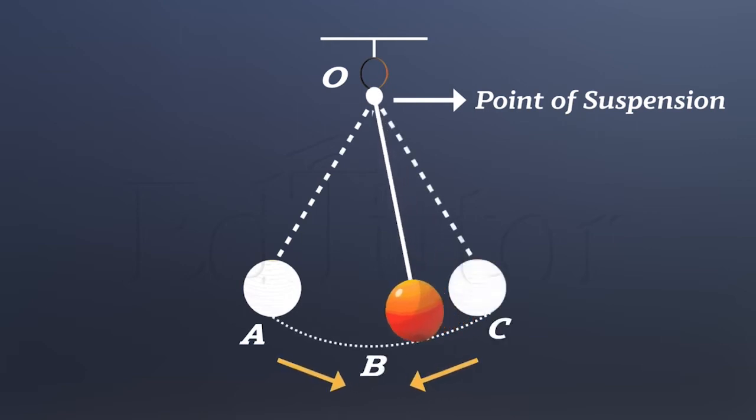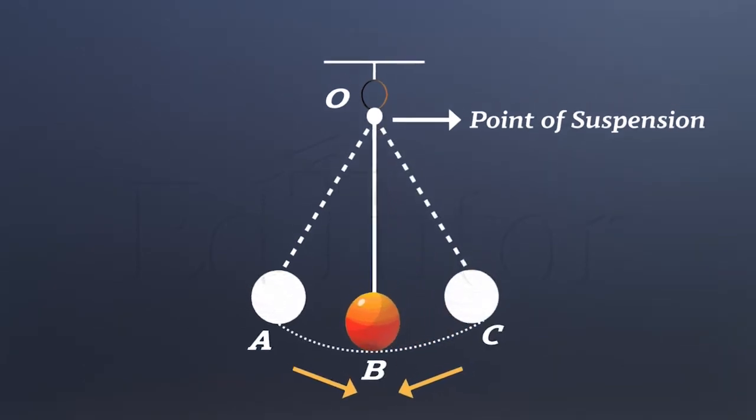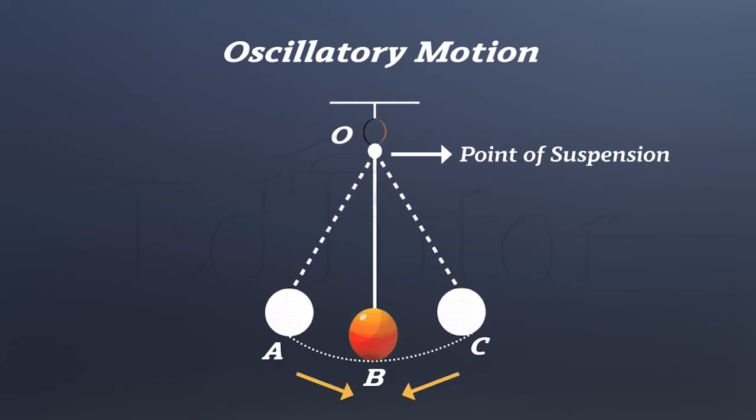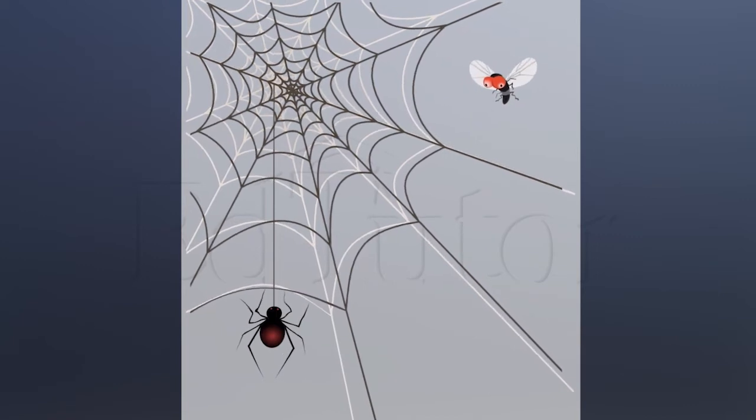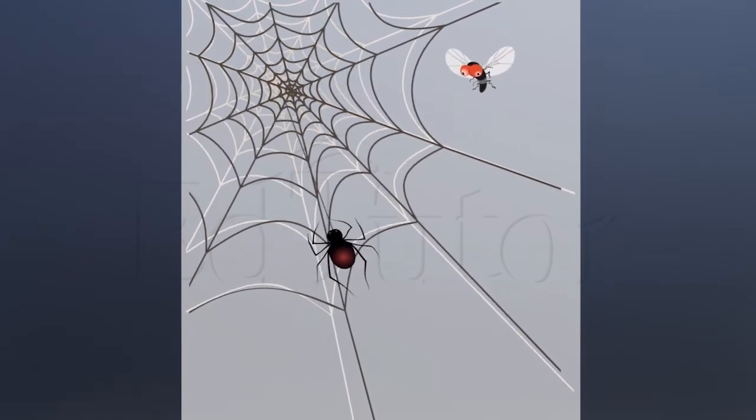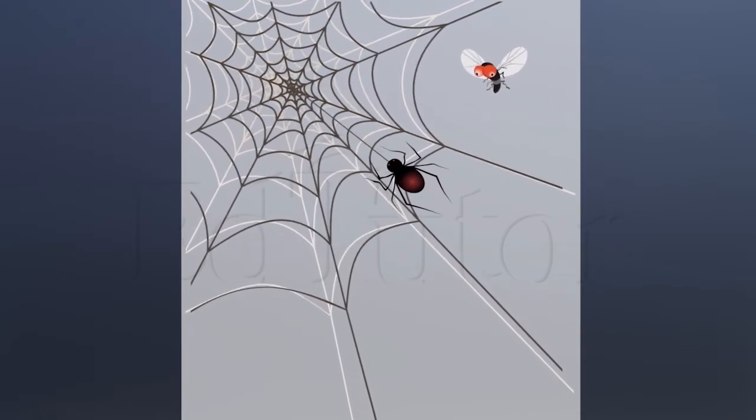Yes, you are right. It's vibratory motion, also known as oscillatory motion. Vibrations are as common in nature. For example, a spider detects its prey due to the vibrations produced in the web.